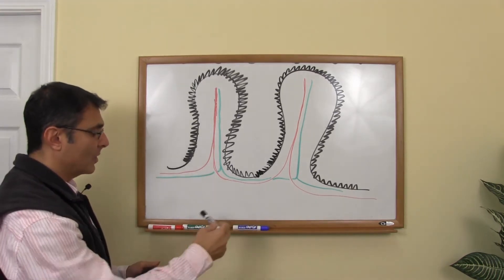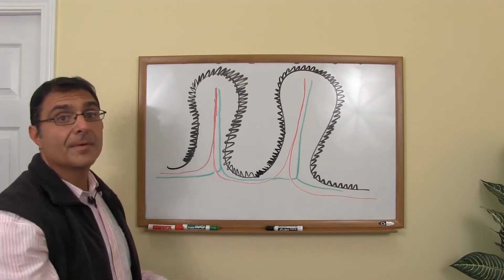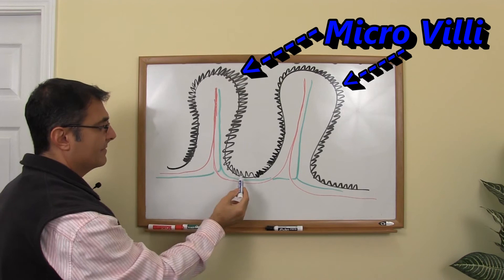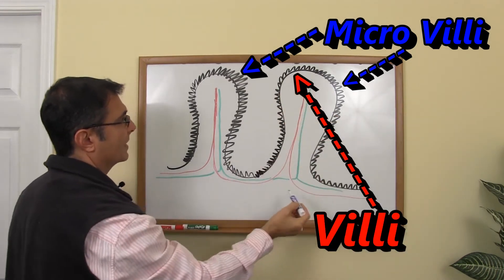And what we have is right here, we have what are called the micro villi. So here's the micro villi and here are the villi. So this individual finger is the villi,